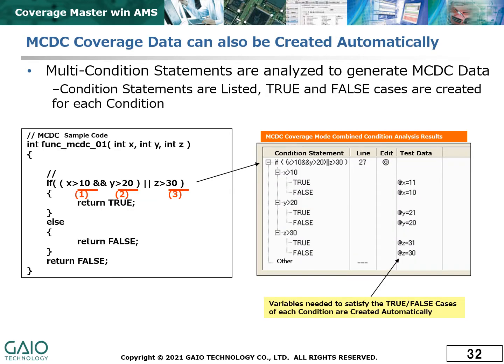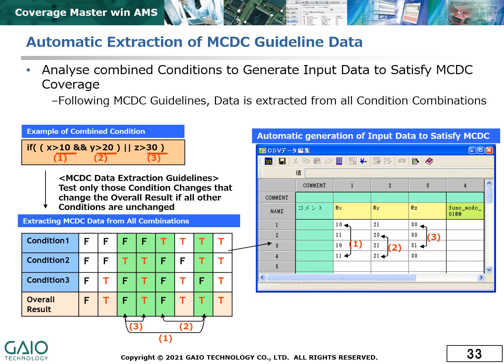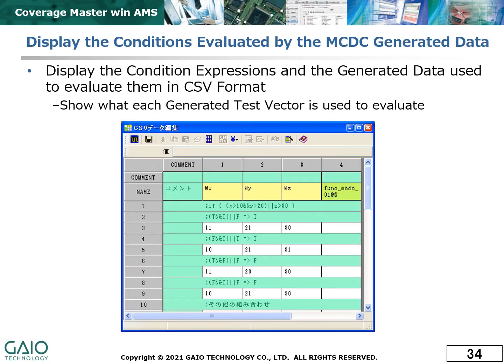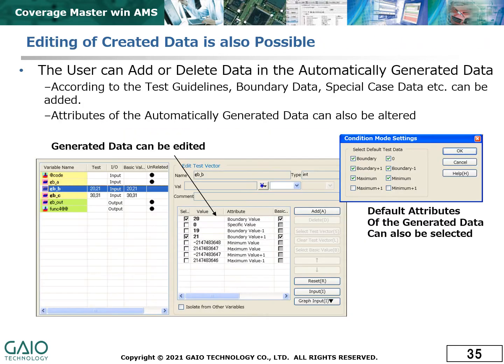For MCDC coverage, multi-condition statements are analyzed to generate input data that leads to the true and false cases of each condition being fulfilled. The input data generated is then analyzed to identify those combinations necessary to satisfy MCDC coverage requirements. The data chart then displays the data combinations and the conditions that each test vector is used to test. For all levels of coverage, the generated data can be edited to add extra conditions for specific cases or to remove cases considered unnecessary.